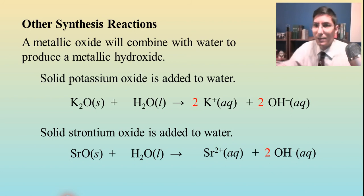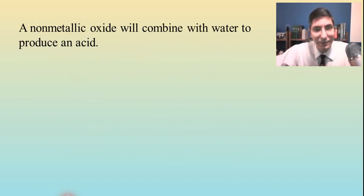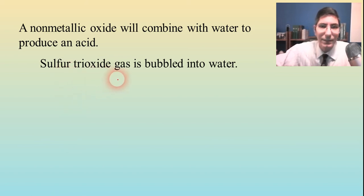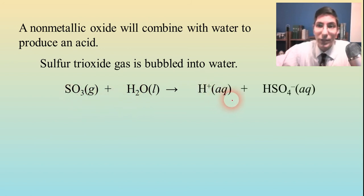Here's another one: non-metallic oxides can combine with water as well, and when that happens, they produce acids. Metallic oxides combine with water to make bases; non-metallic oxides combine with water to make acids. Some of these are pretty easy to predict. Sulfur trioxide gas is bubbled into water. Sulfur trioxide is SO3 with water, you can kind of add up the numbers and get H2SO4. That's a strong acid, so you want to write it in its ionized form: H+ and HSO4-. I think that's balanced as it stands.